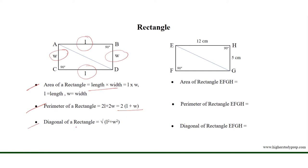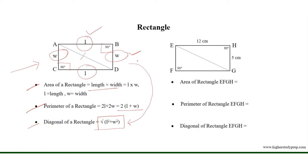The diagonal of a rectangle is equal to the square root of (length squared plus width squared). The diagonal of rectangle ABCD divides the rectangle into two right triangles of equal area, and acts as the hypotenuse. We can apply the Pythagorean theorem to get this formula because the length and width act as the legs of the right triangle.